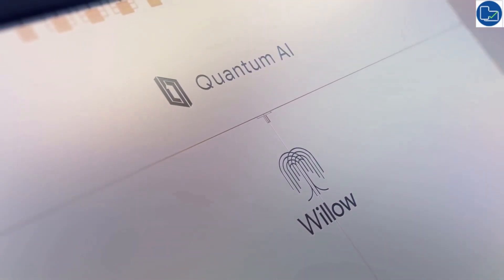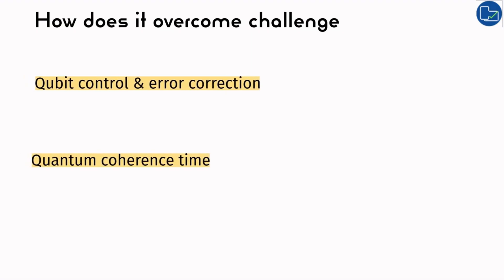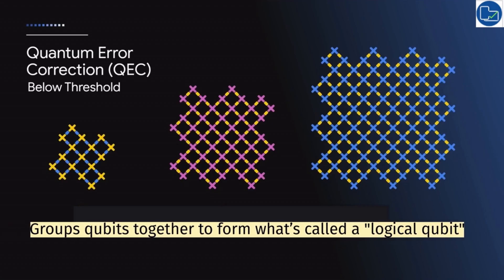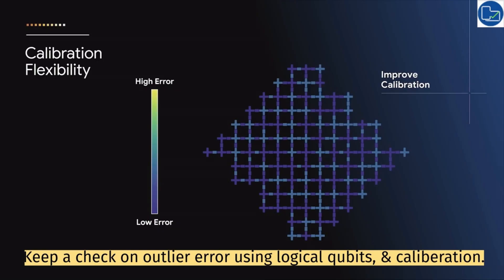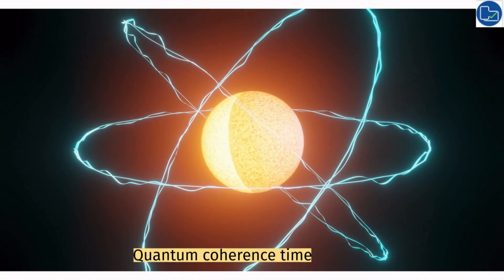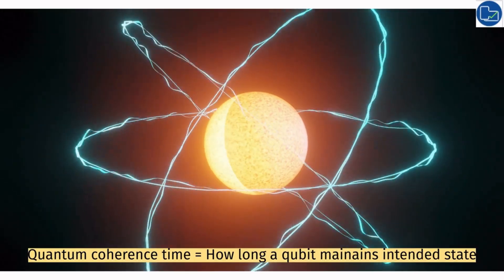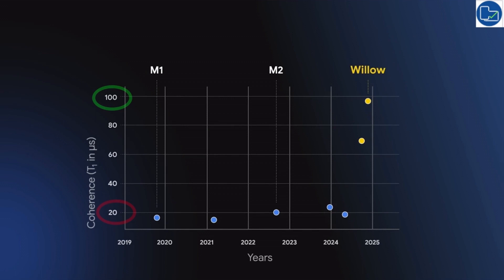This is where Willow comes in. By achieving better qubit control, error correction, and improved quantum coherence time, Willow has taken a giant leap in quantum computing. Willow's innovation is that it groups qubits together to form what is called a logical qubit. With additional calibration checks, the system can perform consistency checks and correct errors as they happen. This has also led to increased quantum coherence time — that is, how long the system maintains its quantum state — improved five times compared to its previous benchmark.